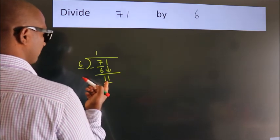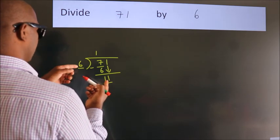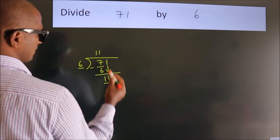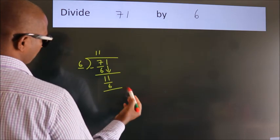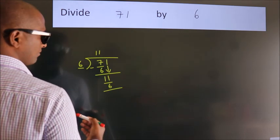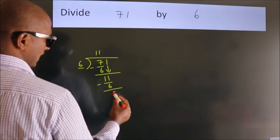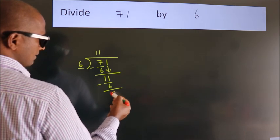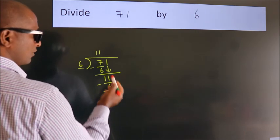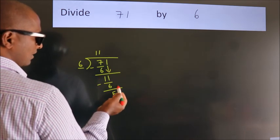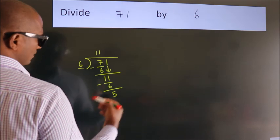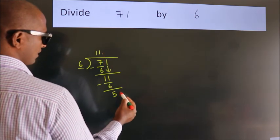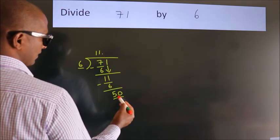A number close to 11 in the 6 table is 6 once 6. Now we subtract. We get 5. After this, no more numbers to bring down. So what we do is we put a dot and take 0. So, 50.